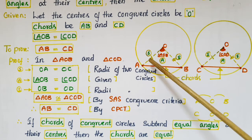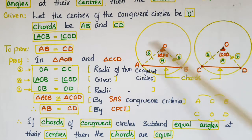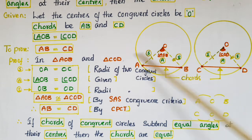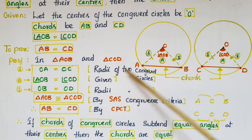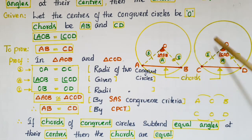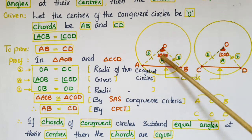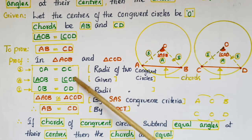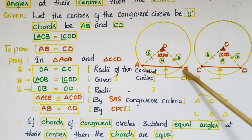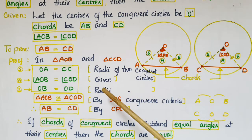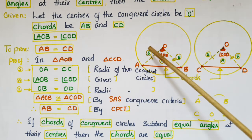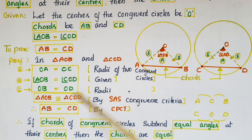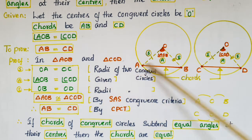To prove the chords equal, we prove the two triangles congruent. In triangle AOB and triangle COD: OA is equal to OC — radii of the two congruent circles; angle AOB is equal to angle COD — given; and OB is equal to OD — also radii of the congruent circles. So by the SAS congruence rule, triangle AOB is congruent to triangle COD.